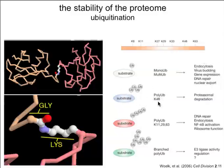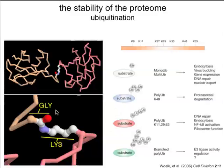Polyubiquitination via lysine 48 can lead to proteasomal degradation — this is the part of the story we really care about. But there are other kinds of polyubiquitination, both linear and branched, using a variety of other lysines. The lysine is critical for determining the structure of the polyubiquitin polymer. These can also lead to endocytosis, activation of other processes, or interaction with the ribosome. But for us, let's think about the death of proteins — degradation within the proteasome from this polyubiquitin tail that is tagged on the surface of some protein substrate.